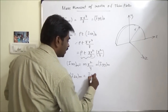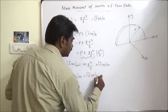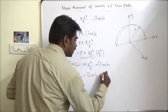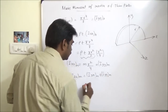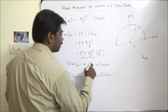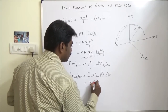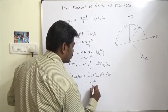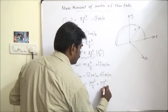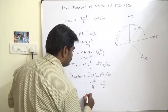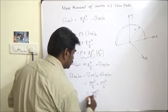For thin plates, Izz_mass equals Ixx_mass plus Iyy_mass by the perpendicular axis theorem. So Izz_mass = m·r²/4 + m·r²/4 = m·r²/2.